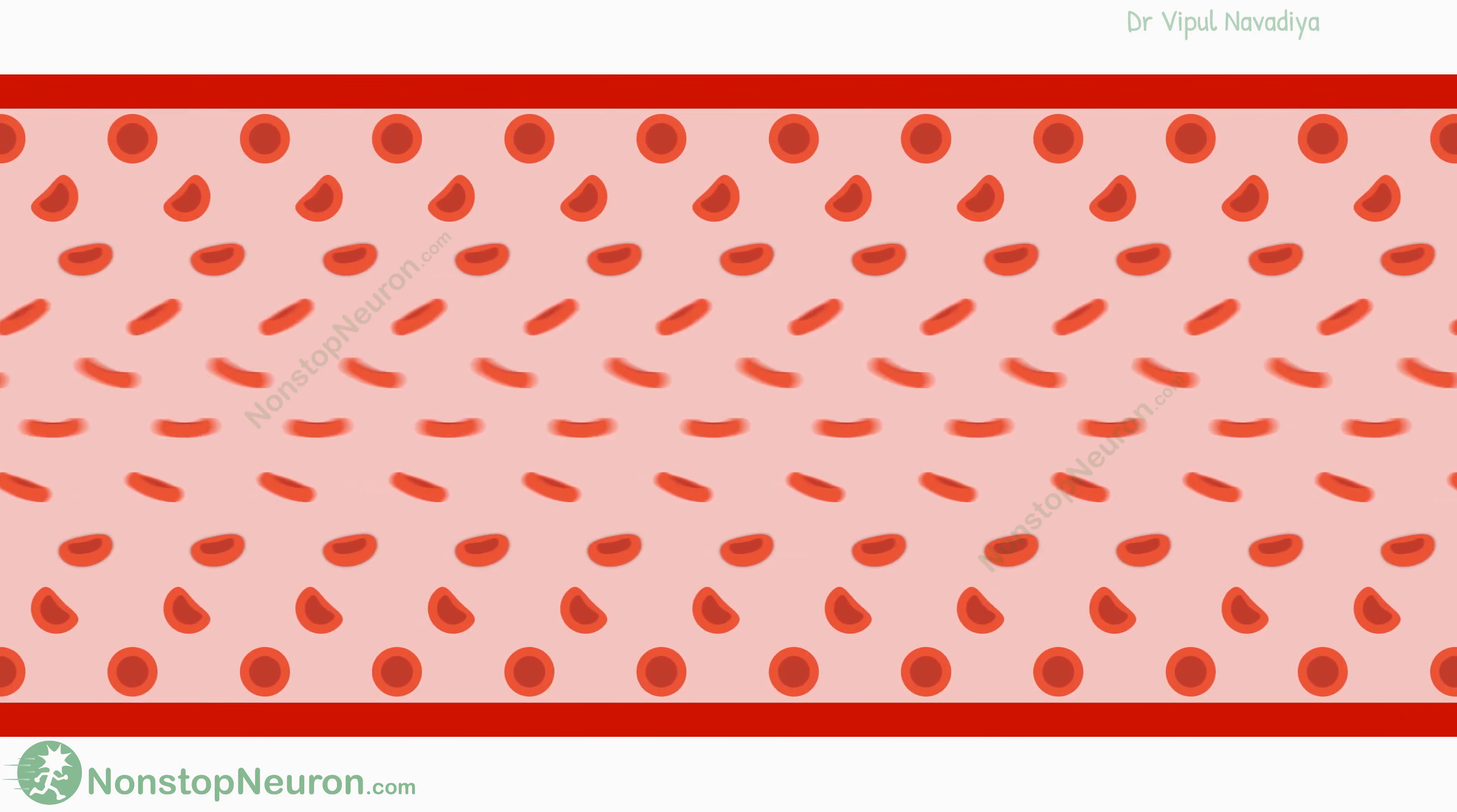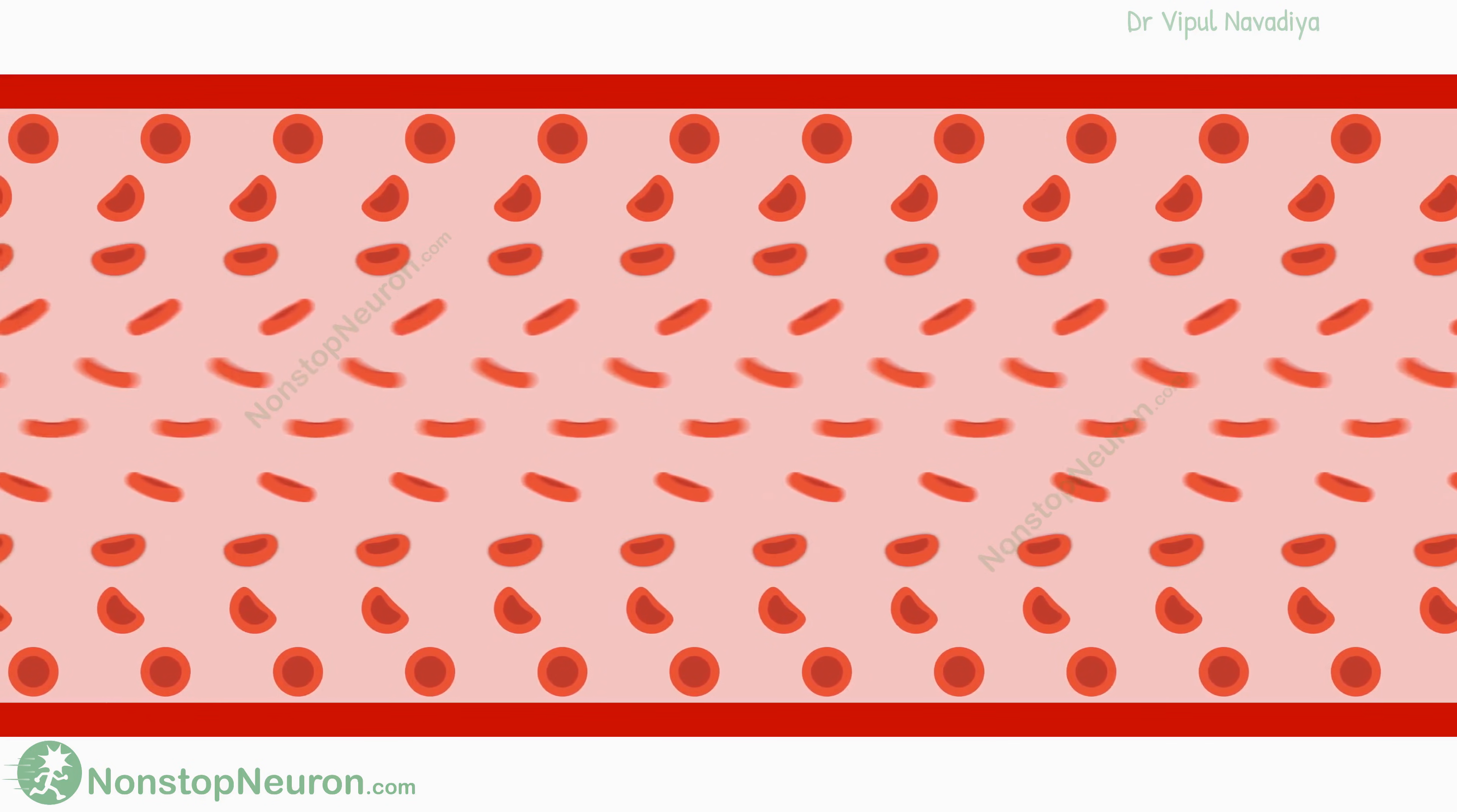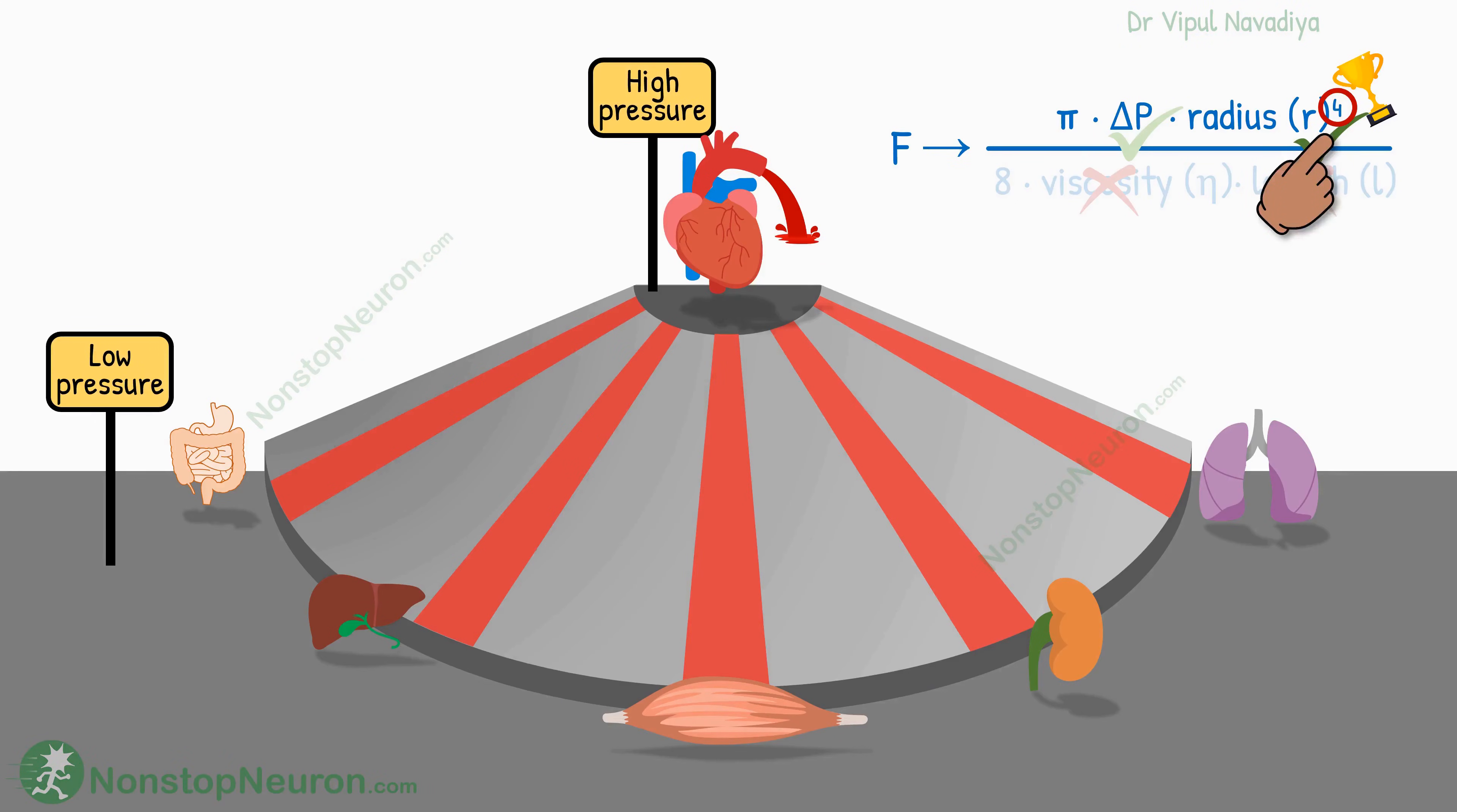Thus, even a small change in radius produces large changes in flow. So that's the beauty of fourth power. But it's just one thing. The other special thing about radius is that each organ has its own arterial supply. So regulating the radius of the individual artery allows independent regulation of blood flow to each organ. This helps increase blood flow to only those organs where it is needed the most without much changes in other organs.